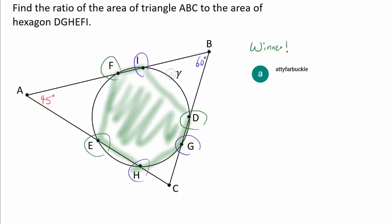So we want to compare the area of ABC to this hexagon formed by the six points of intersection.